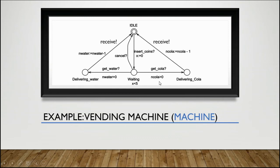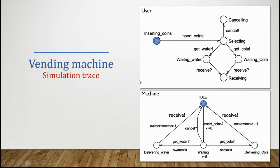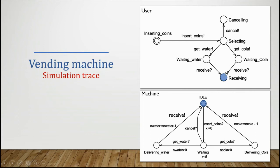The user receives a command — get the water. After the user receives, the machine returns to idle. Now let's look at the simulation of our timed automata. Once the user inserts the coins, the machine was idle. After coins are inserted, the user moves to the selecting state, while the machine waits for the user to select. Suppose the user selects cola — the machine should deliver the cola while the user waits for it.